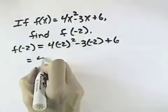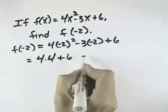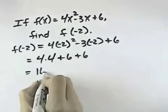Simplifying, negative 2 squared is 4, so we get 4 times 4, minus 3 times negative 2 becomes plus 6 and plus 6. 4 times 4 is 16,